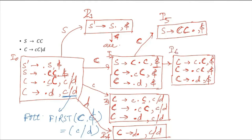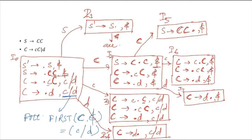From I2 after the dot d is there — this gives capital C to d dot comma dollar, which we call I7. Notice something important: in I7 we have C to d dot with lookahead dollar, and in I4 we also have C to d dot, but the lookaheads are different. This is what happens in LR(1) parsing — if it were SLR or LR(0) these two would have been merged, but in LR(1) we keep them separate because their lookaheads differ.